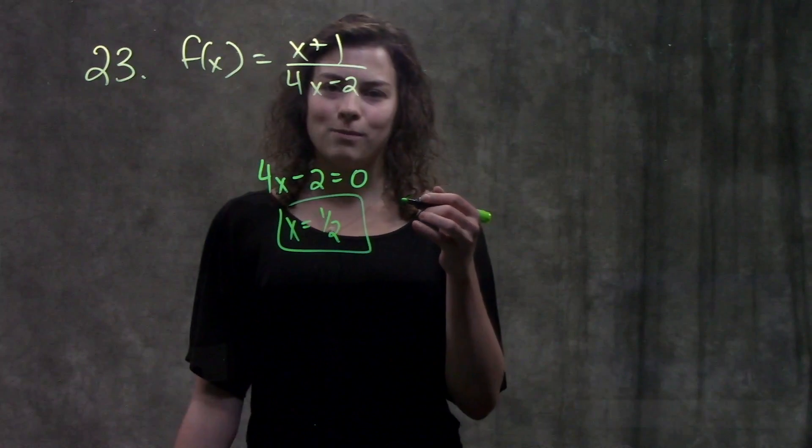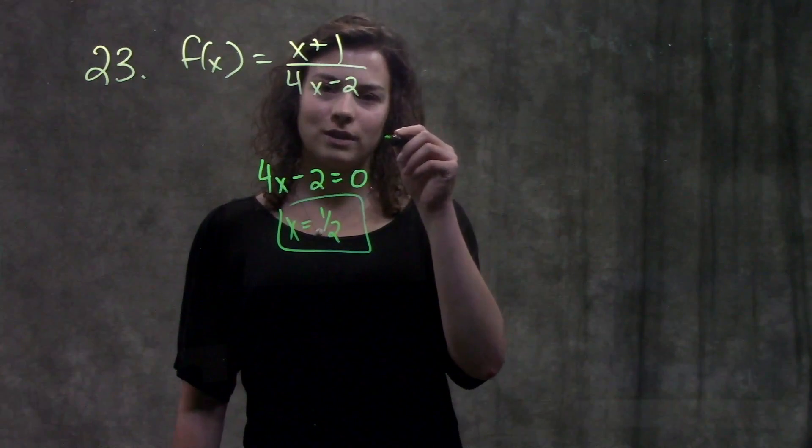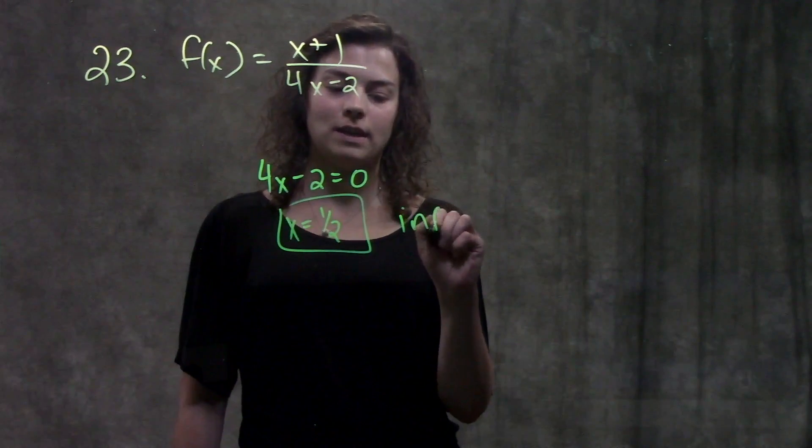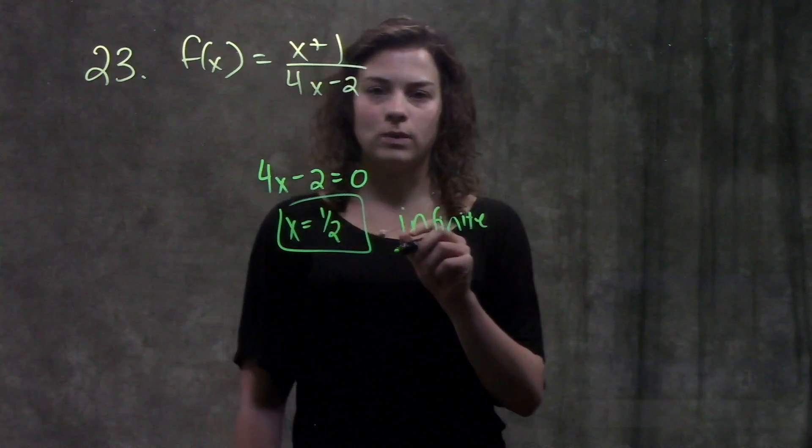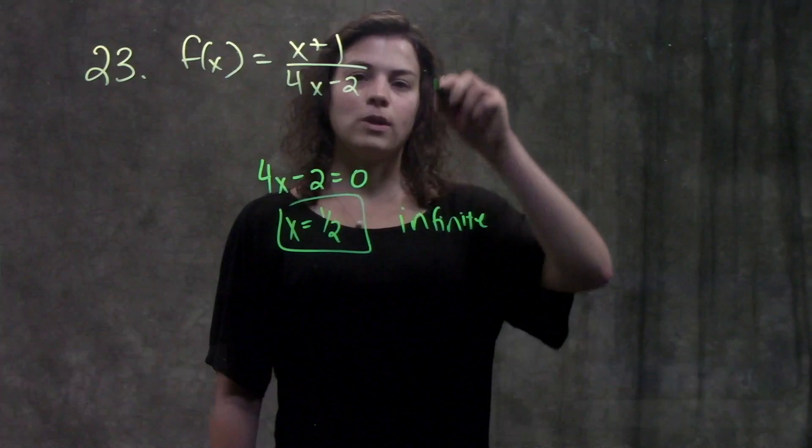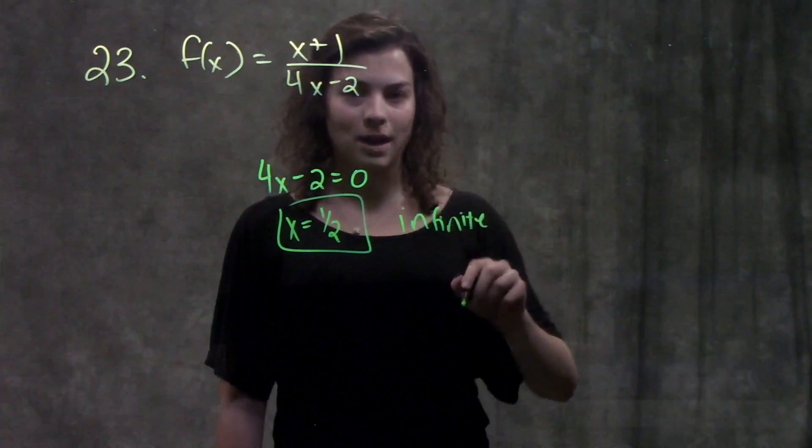Just a pro tip: whenever you have some number over zero, that's going to give you an infinite discontinuity. There'll be an asymptote at that point, x equals 1 half, and the graph will be going either up to positive infinity or down to negative infinity.